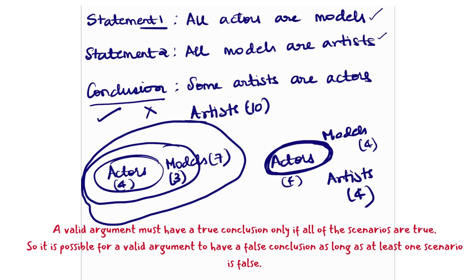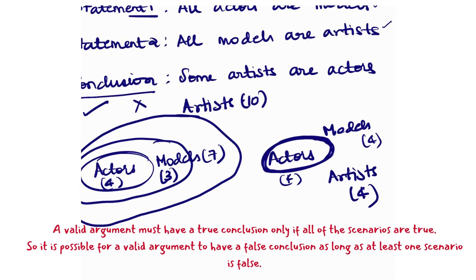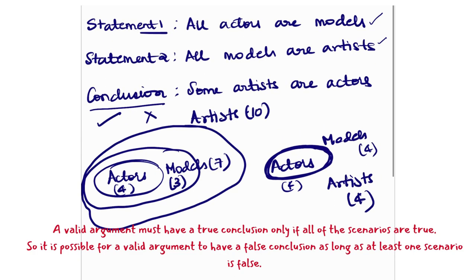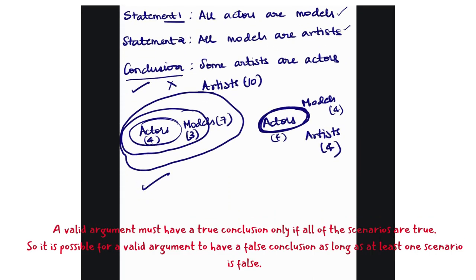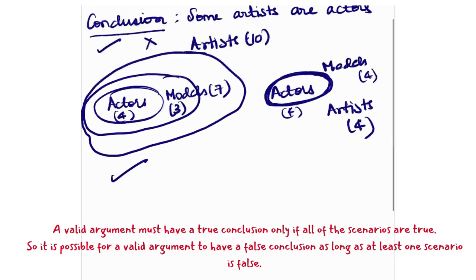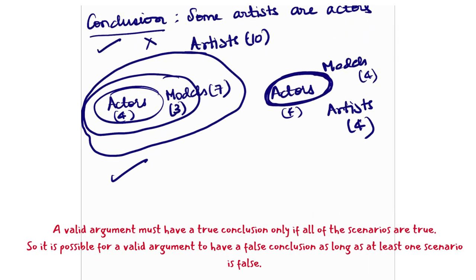So the conclusion statement is some artists are actors. So let's look at the first scene, some artists are actors. So there are 10 artists out of this, four artists are actors. So some artists, four artists are actors. So in this case, the conclusion is true. In this case, the conclusion is true. But we also have to see if the conclusion is true in the other scenario.